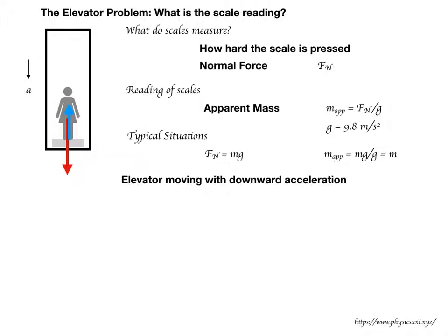Let's see what happens in the elevator. If the elevator is moving downwards with an acceleration, that means the downward forces must be stronger than the upward forces. In our case, the normal force — the force with which the scale pushes against our feet, which is the reading — will be less than the gravitational force pulling us down. Newton's second law gives us the specifics: the net force equals mass times acceleration.